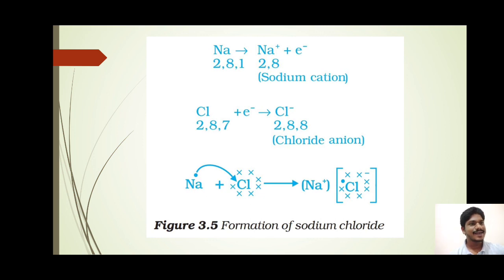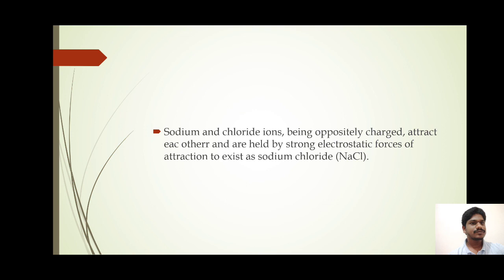Sodium and chloride ions, being oppositely charged, attract each other and are held by strong electrostatic forces of attraction, and now exist as an ionic compound called sodium chloride, with the formula NaCl. These compounds which are formed by the transfer of electrons—here sodium transfers the electron to chlorine—so this compound is formed by the transfer of electrons.